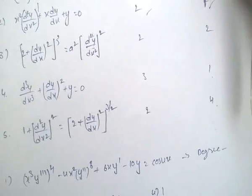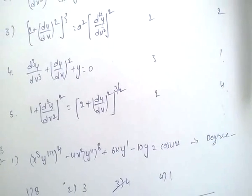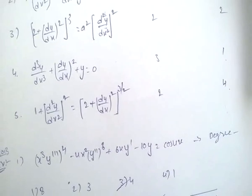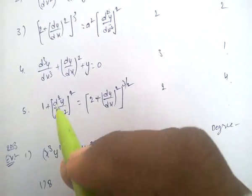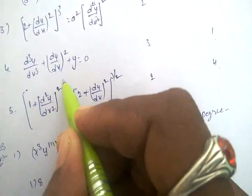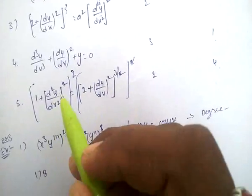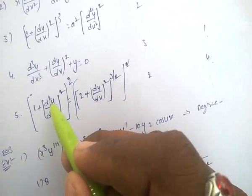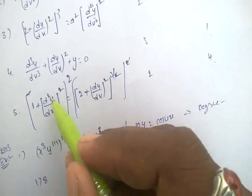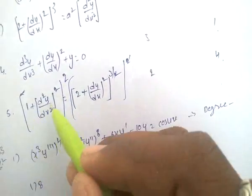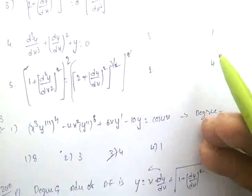If the equation is in the form of square roots or cube roots, we square or cube both sides. Here the highest derivative is under a square root, so squaring both sides. After simplification using the (a+b)² formula, we get d²y/dx² raised to the power of 4. So order is 2 and degree is 4.